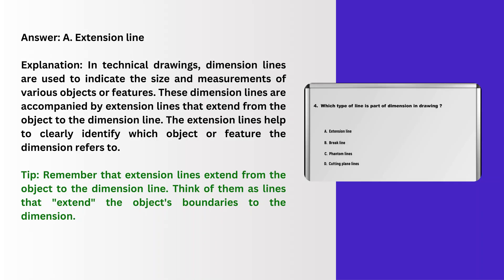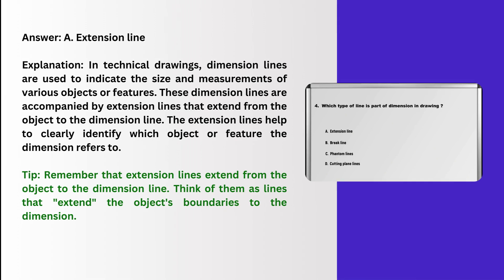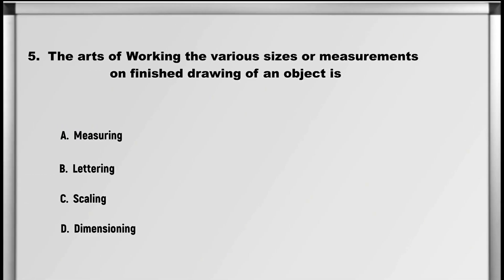Explanation: In technical drawings, dimension lines are used to indicate the size and measurements of various objects or features. These dimension lines are accompanied by extension lines that extend from the object to the dimension line. The extension lines help to clearly identify which object or feature the dimension refers to.